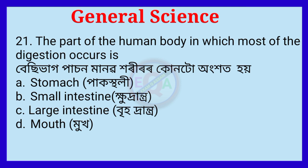Question number twenty-one. The part of the human body in which most of the digestion occurs is? The correct option is Option B: Small intestine.